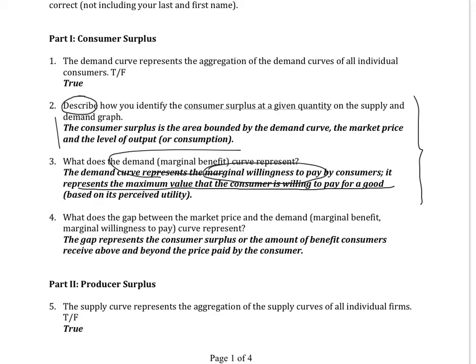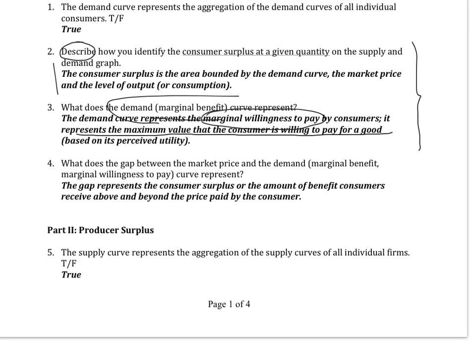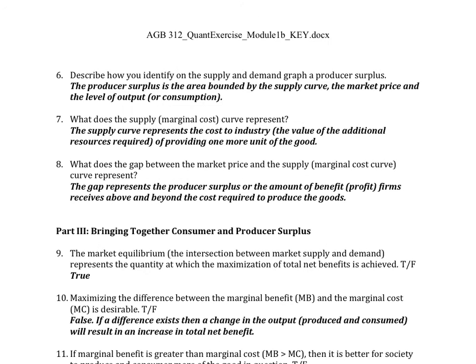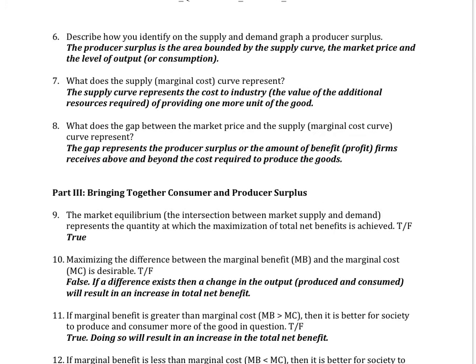Next we move to producer surplus. As I mentioned, problems 6 and 7 involve describing or identifying producer surplus — it's a very visual thing. Given a graph of supply and demand, can you identify the producer surplus at a given price or quantity? The key difference is the representation: what is the marginal cost telling you? The supply curve represents the cost to industry — the value of the additional resources required to provide one more unit of a good.